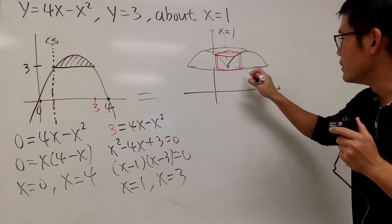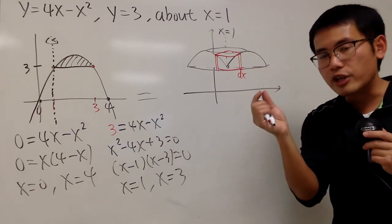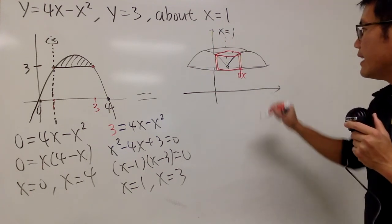Have a look. This right here is the thickness of the shell, which is dx. I measured it by dx, because that's just a small change in the x values.